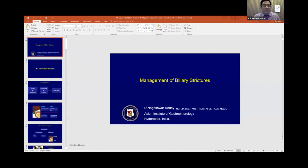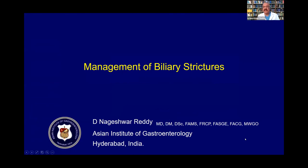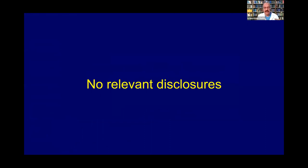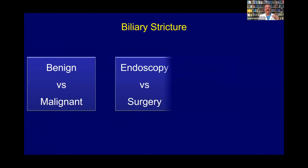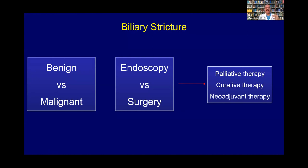Thank you very much. I'd like to thank Anil for giving this opportunity to talk on a topic which is very common in clinical practice. In recent years, we have developed an algorithm to approach these patients. Over the next 15-20 minutes, I'll give a very practical approach. When a patient comes with a biliary stricture, the first thing is to determine whether it's benign or malignant. Once determined, you decide whether to pursue endoscopic or surgical therapy. Medical therapy has very little role here. With endoscopic therapy, you decide whether it's palliative, curative, or neoadjuvant.